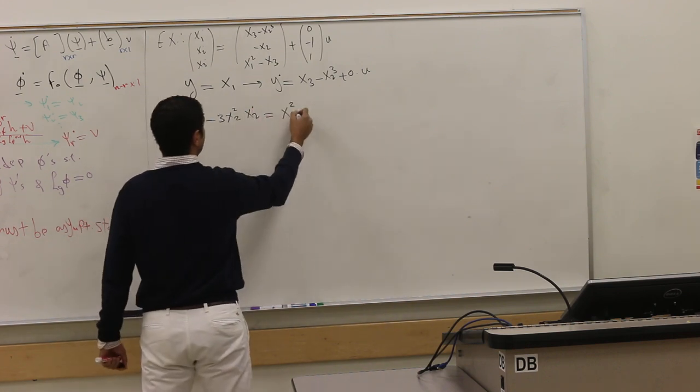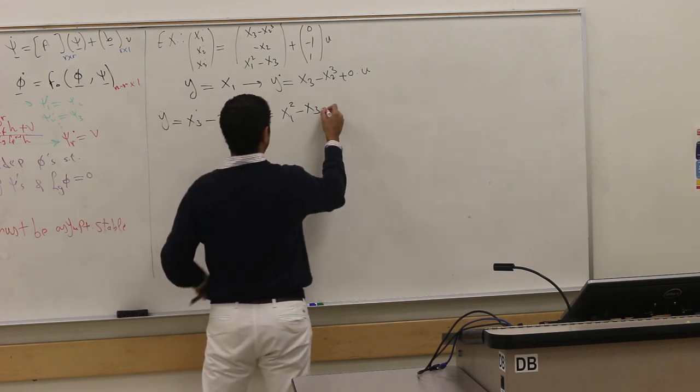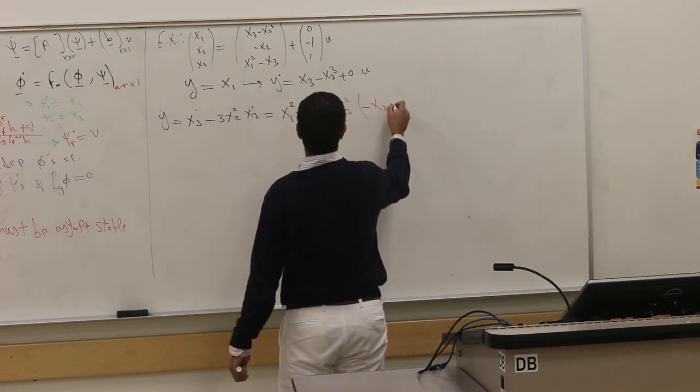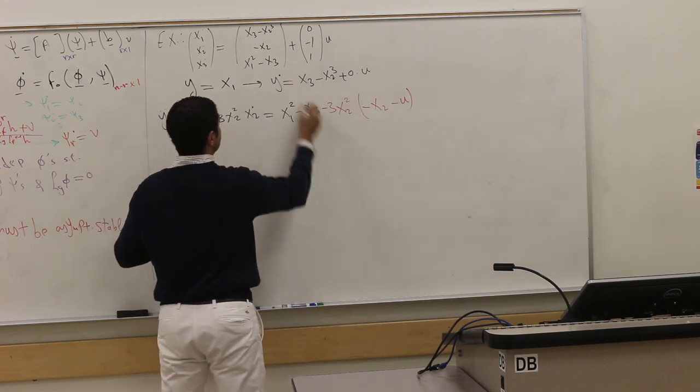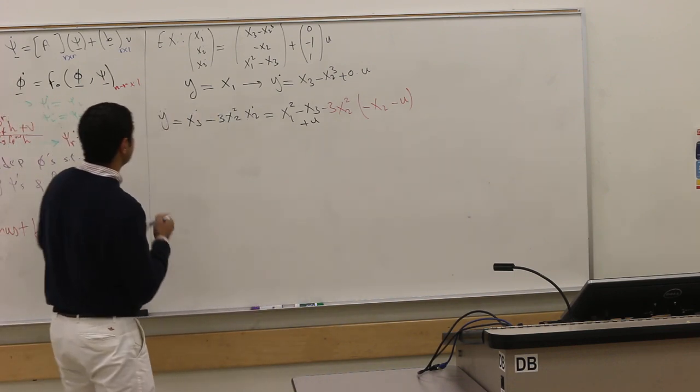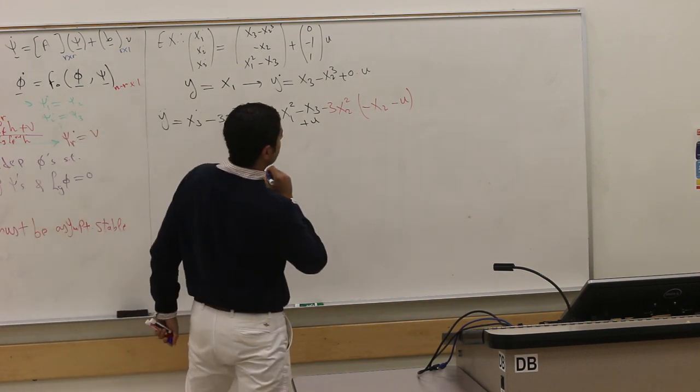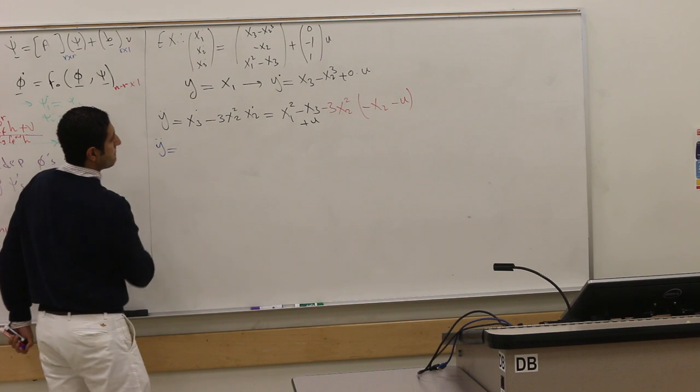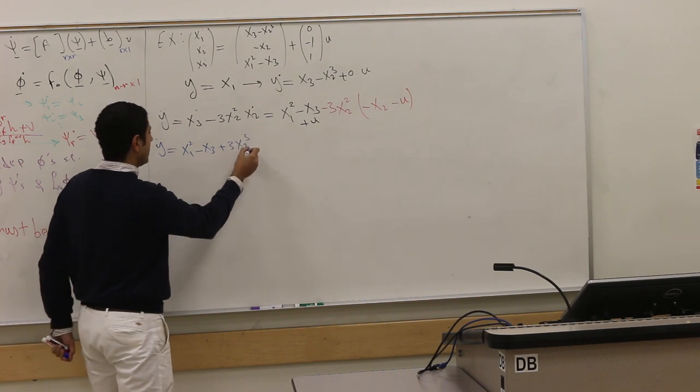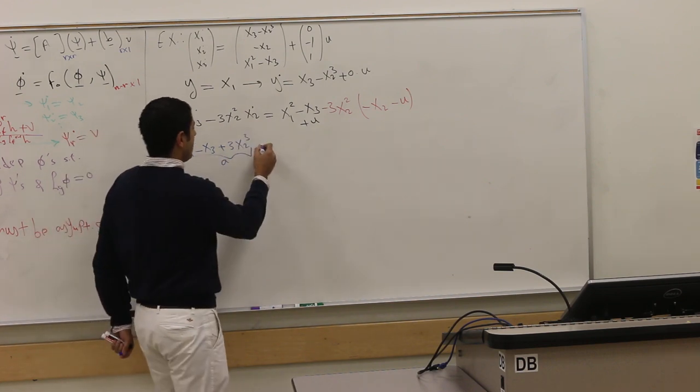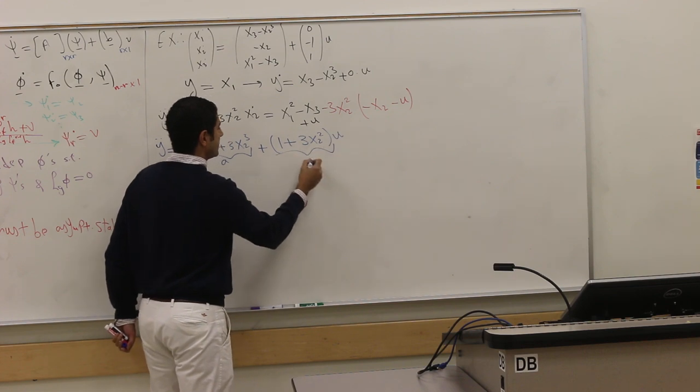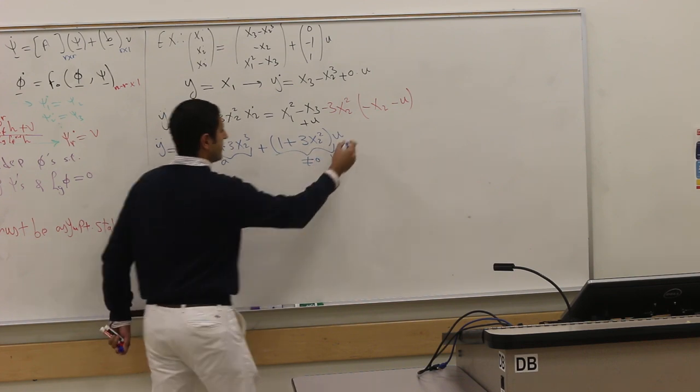It's x₃ dot minus 3x₂² x₂ dot. x₃ dot is x₁² minus x₃. x₂ dot is negative x₂ negative u. I have here also plus u for x₃. The result is y double dot. Let me continue over there.